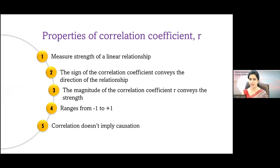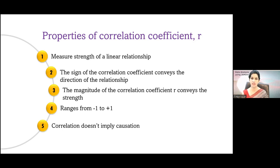Correlation doesn't imply causality. That means if two variables are correlated with each other, we cannot say that a particular factor is causal for the other factor. To study causality, there is Hill's criteria for causal association, and you need to satisfy those criteria before we say that factor X is causal for Y. The value of the correlation coefficient or strength of association is one of Hill's criteria, but it is not the only criteria — there are other criteria as well.